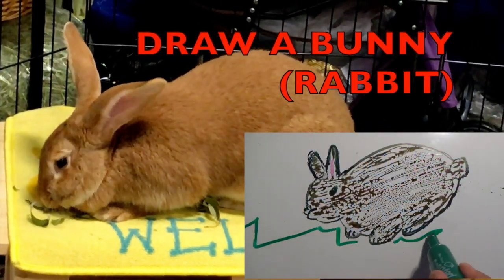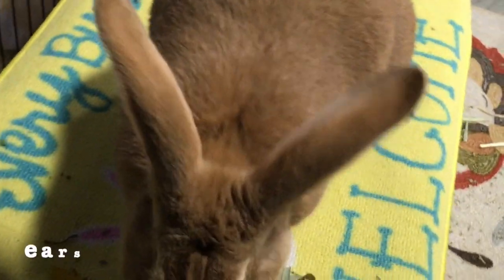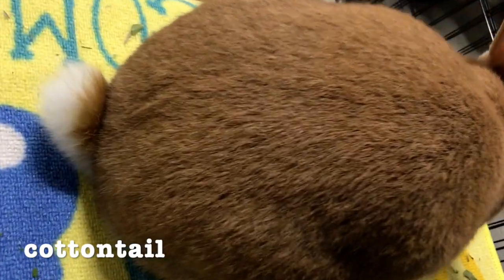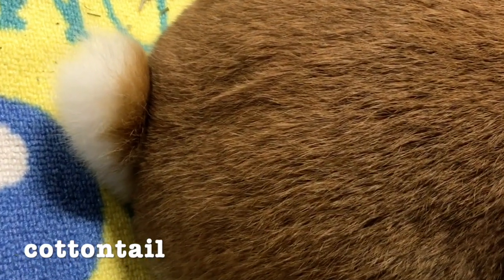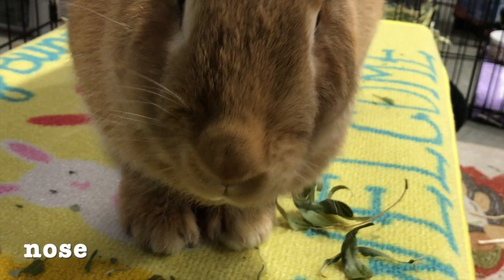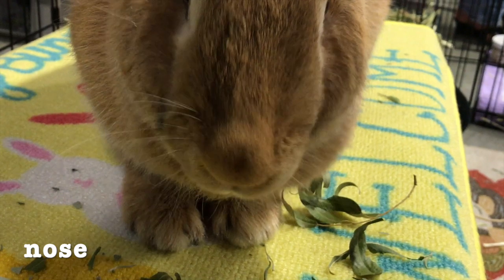Draw a bunny rabbit. Boys and girls, we're gonna draw some ears on a bunny rabbit, a cotton tail. Isn't that cute? And a nose. See its nose? It's like it has a Y there.